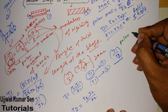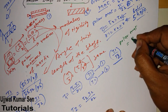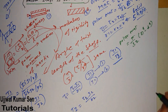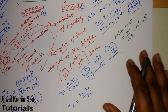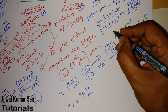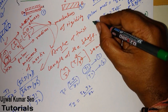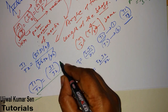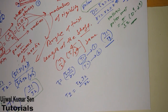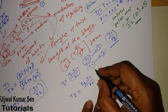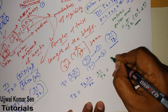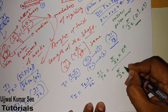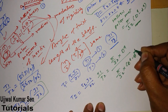For the hollow shaft, the polar moment of inertia formula is π/32 · (D⁴ − d⁴), where D is the external diameter and d is the internal diameter. Now we have the polar moment of inertia for both the hollow shaft and the solid shaft.